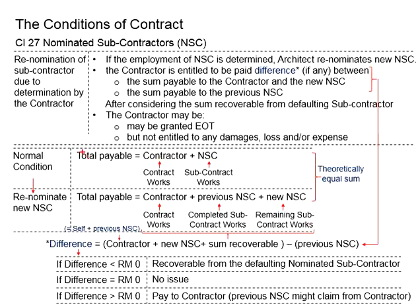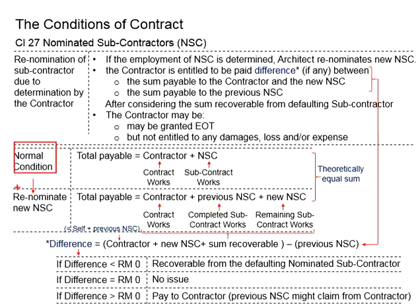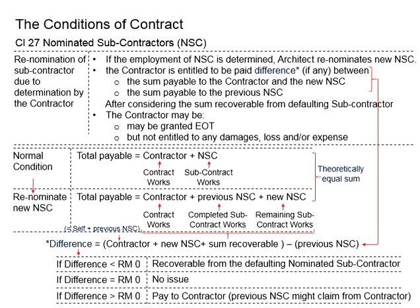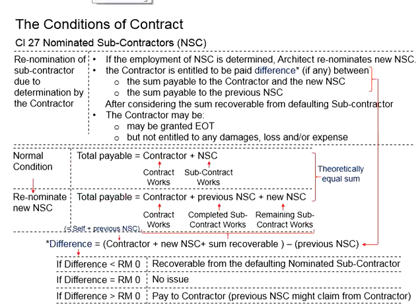Theoretically, the total amount payable by the employer should be the same, since the quantification of the amount payable is determined by the task — the work done by each party. Since the work is consistent throughout both situations, regardless of the number of personnel involved, the amount of work to be done will remain the same. Therefore, the total payable should theoretically be an equal sum.